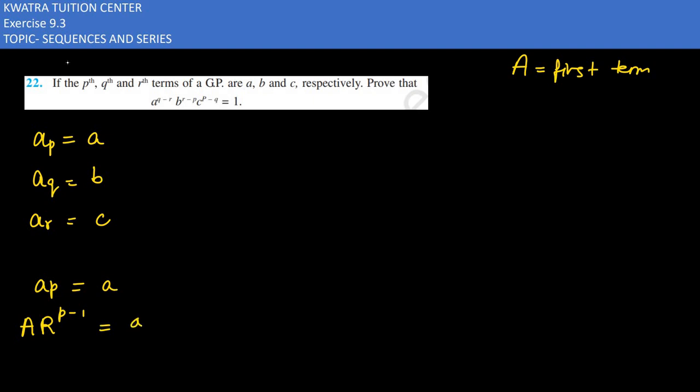The second term is A times r to the power q minus 1 equals b. Third, A times r to the power r minus 1 equals c. First equation here, second here, third here.